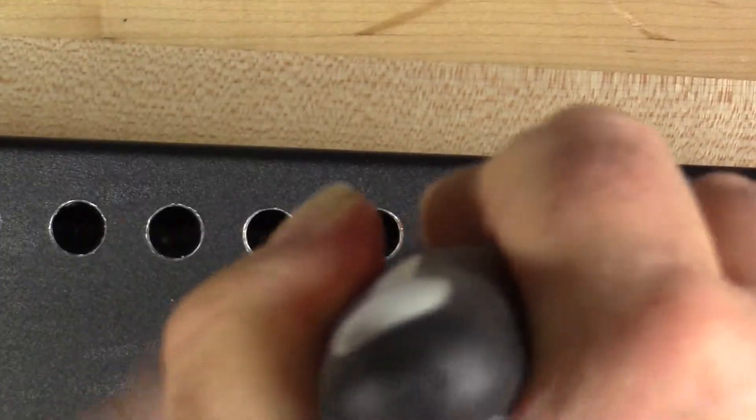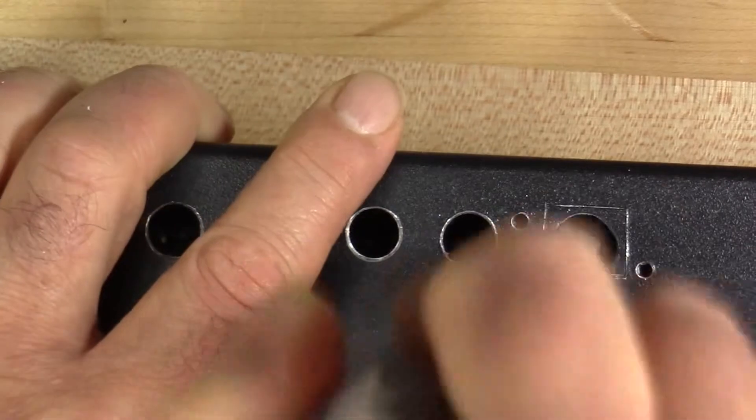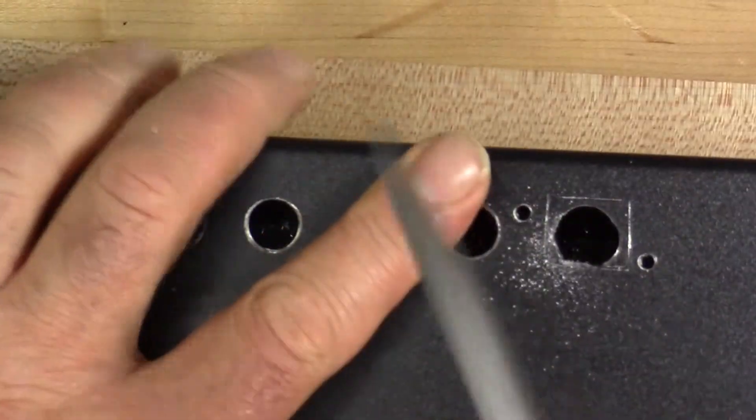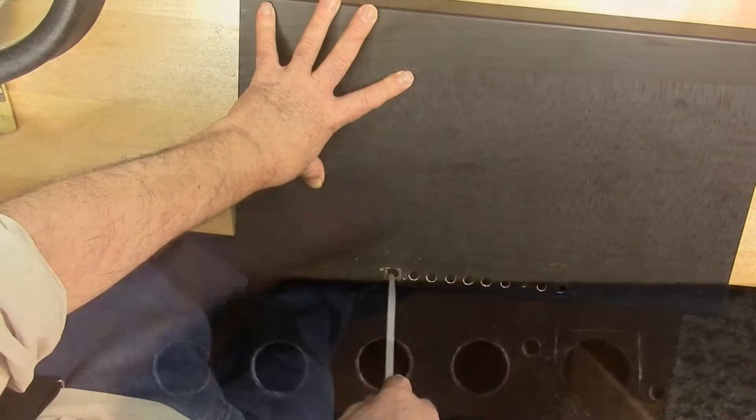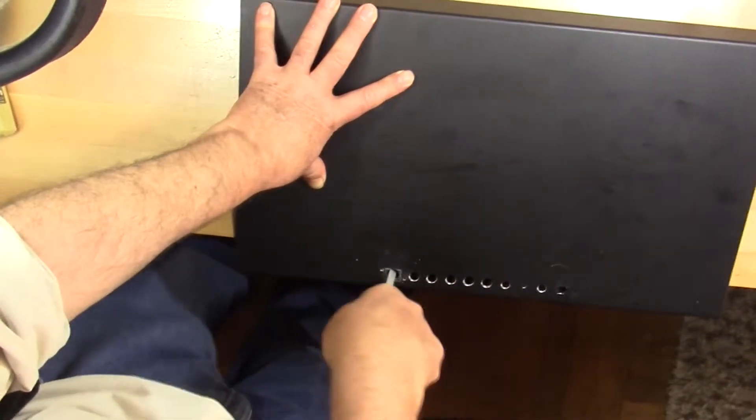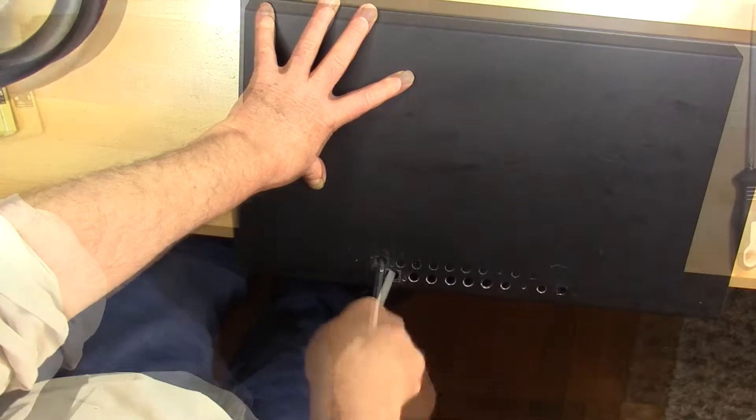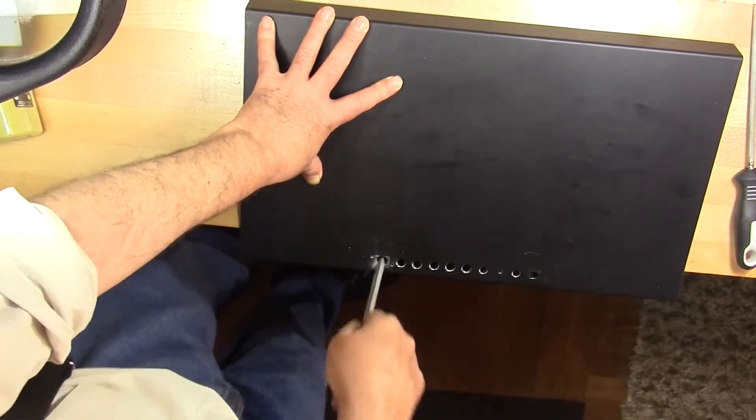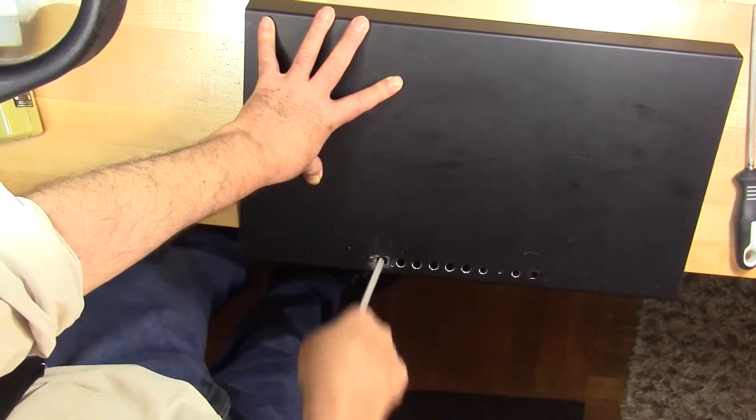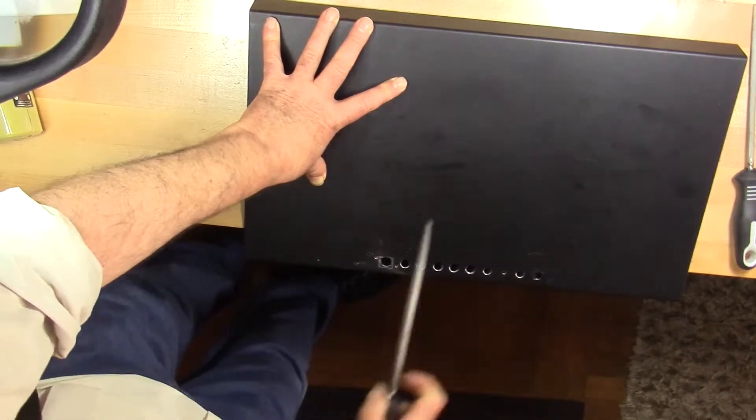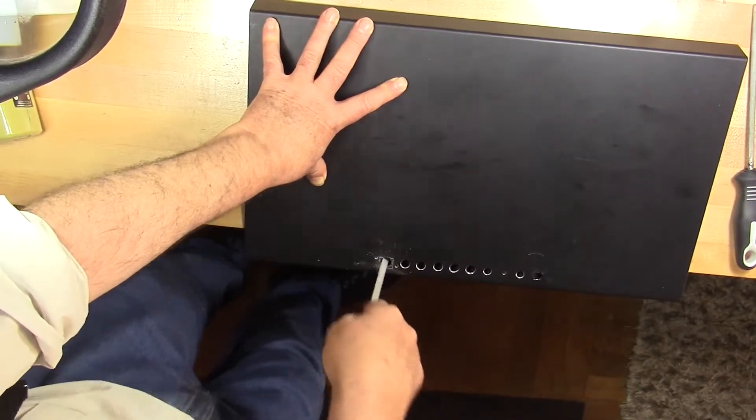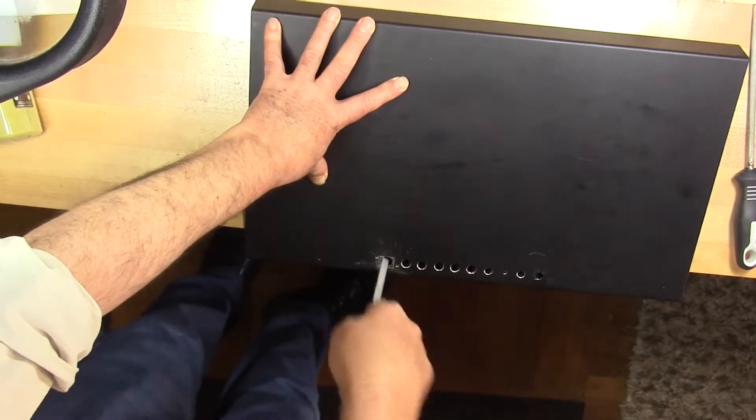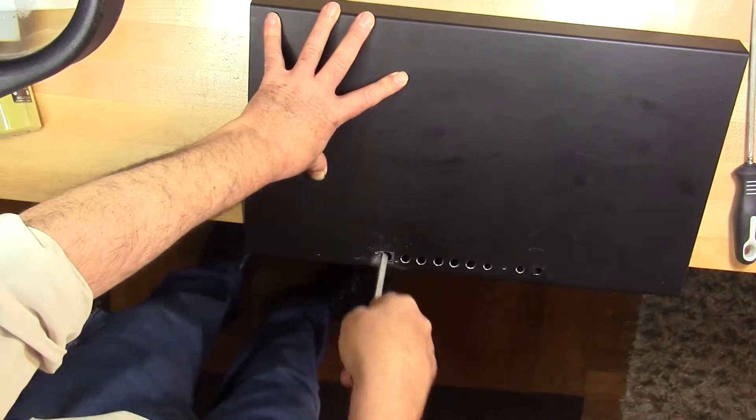Now, you will notice that I am putting some pressure on the backstroke of these files, and one should not do that. Files cut on the forward stroke and shouldn't be used as a saw. So, in general, do what I say rather than what I'm doing here. In fairness, the aluminum is relatively soft metal, and the chances of doing damage to the file are not all that great.